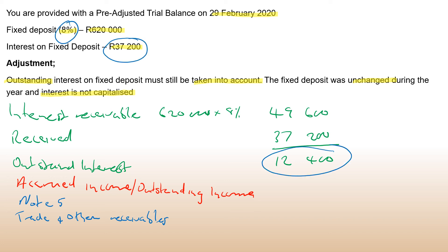Basically, that's how you calculate it. You need the interest rate and the amount received during the year, then you calculate how much interest was receivable in total from the fixed deposit. The difference between what was received and what should have been received becomes the outstanding interest. Please like the video, share it with friends and colleagues, turn on your notifications for the channel so you won't miss anything when new content is uploaded. Thank you so much.